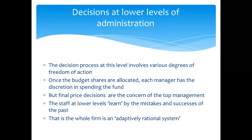Decisions at lower levels of administration involve various degrees of freedom of action — each department has its own freedom of action. Once budget shares are allocated, each manager has discretion in spending the funds, but final price decisions are usually taken at the top management level. The staff at lower levels learn from the mistakes and successes of the past. Therefore, we say the whole firm is an adaptively rational system.